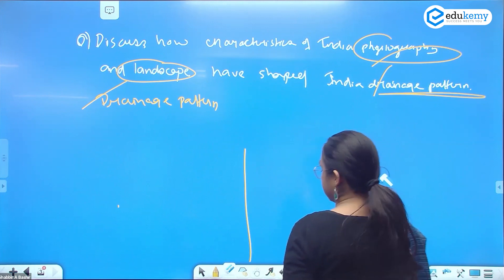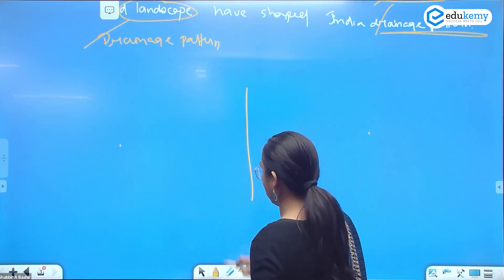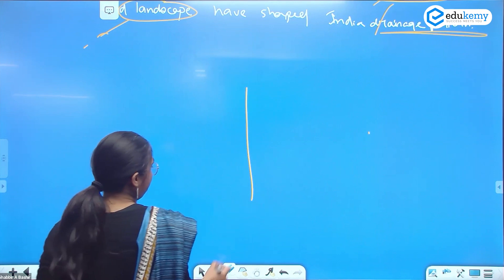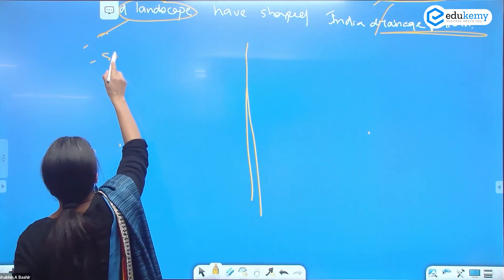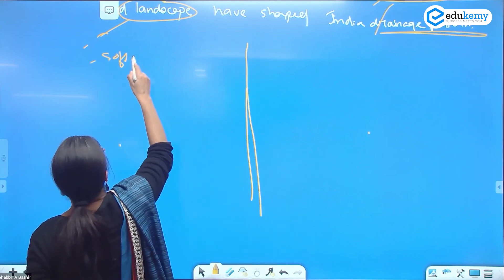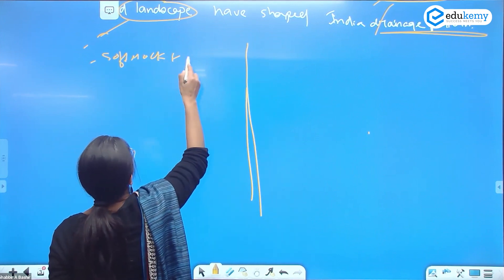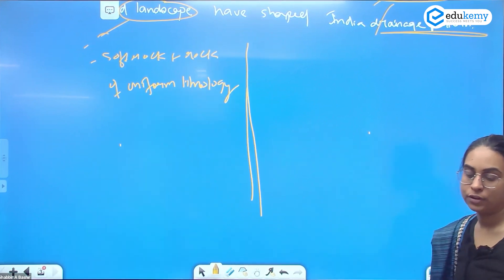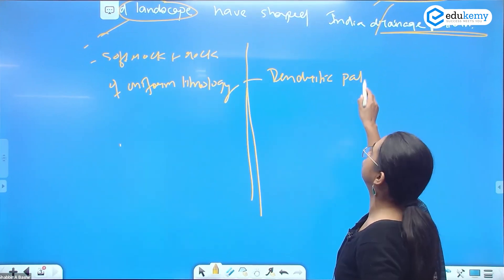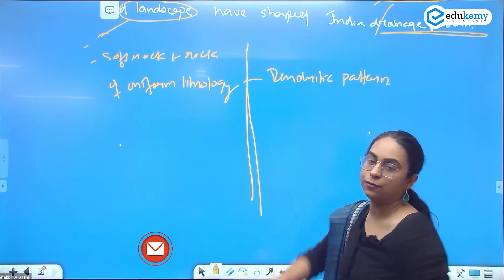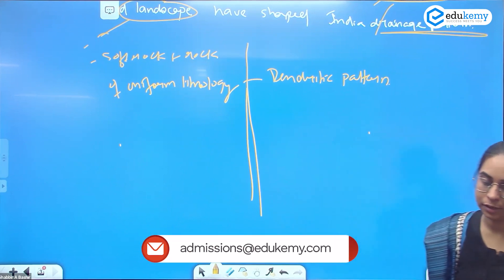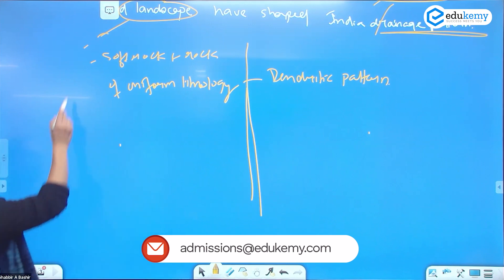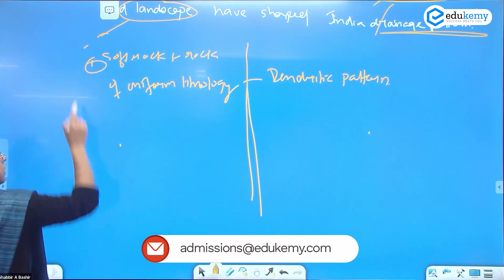In the table: if you have soft rocks and rocks of uniform lithology — soft rock plus rock of uniform lithology — you will have a dendritic pattern. Soft rocks combined with low relief also give dendritic pattern. The first point: when upliftment of the mountain is slow.